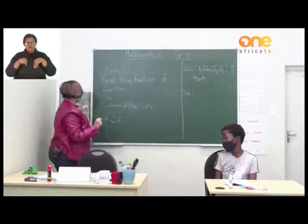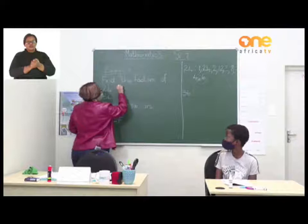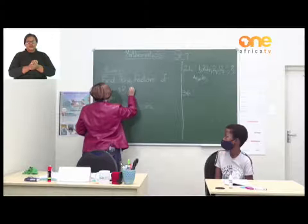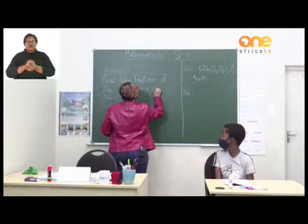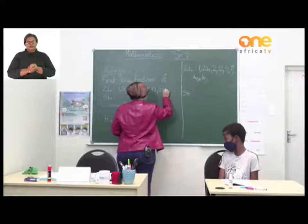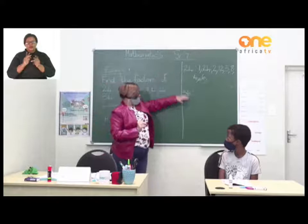What is our next step? We put them in order. The factors of 24 in order are: 1, 2, 3, 4, 6, 8, 12, and 24.